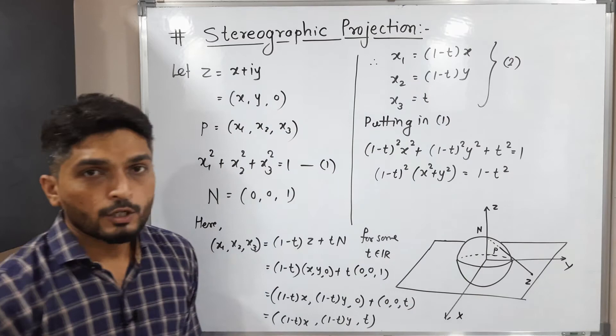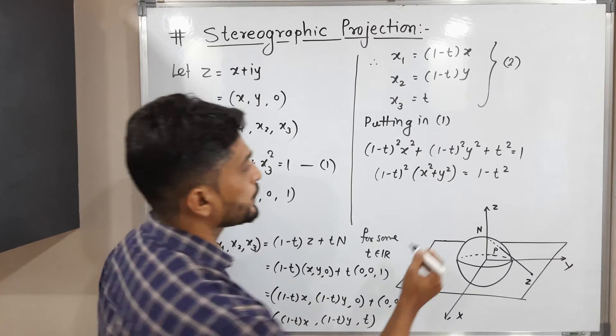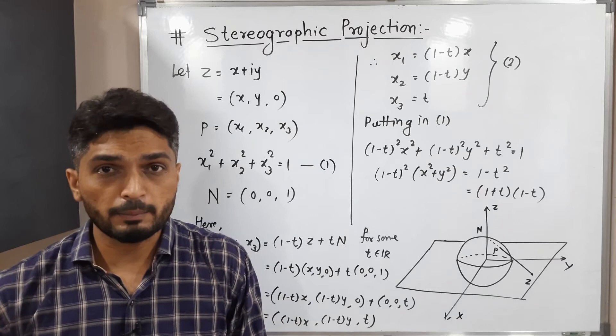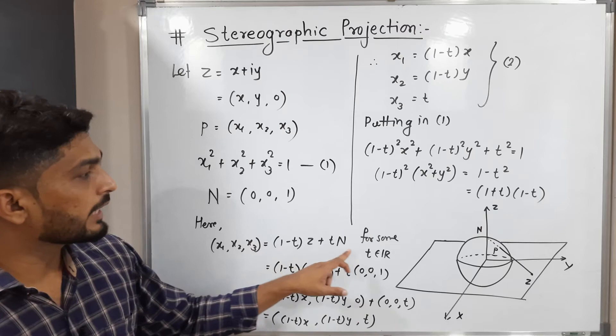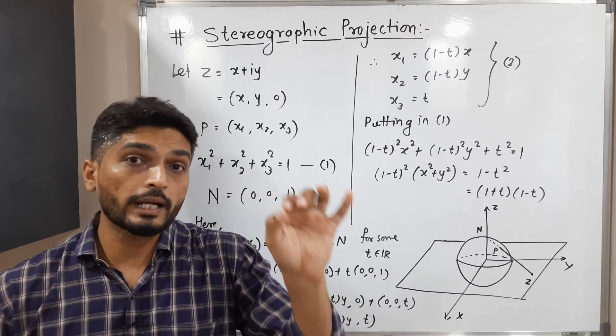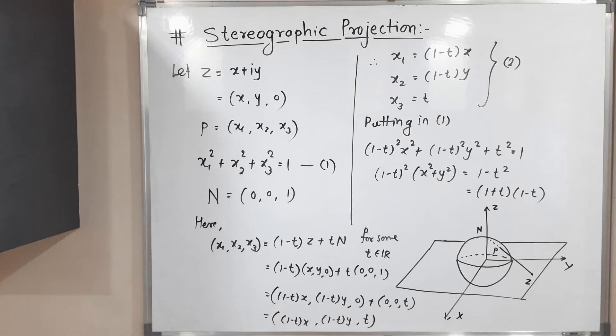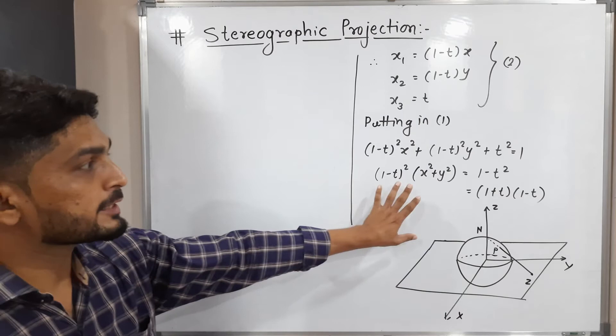Using the difference of squares formula, 1 − t² = (1+t)(1−t). A very important condition: t must not equal one. If t equals one, then P and N would be the same point — the north pole — which maps to infinity, and we are not considering infinity here. So t ≠ 1, which means we can cancel the (1−t) factor from both sides.